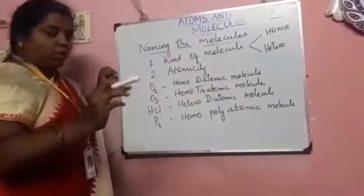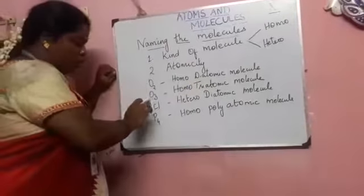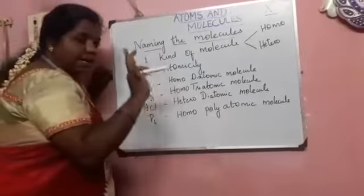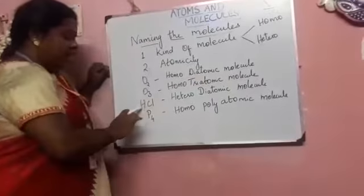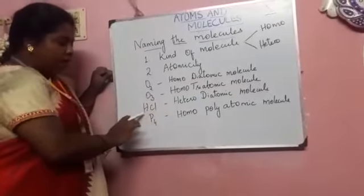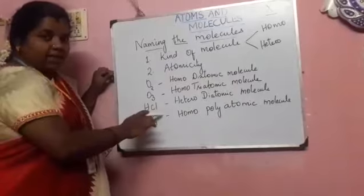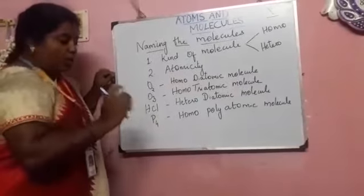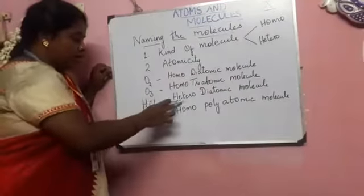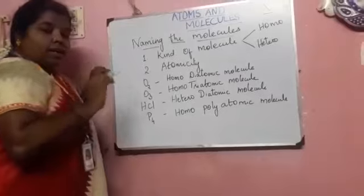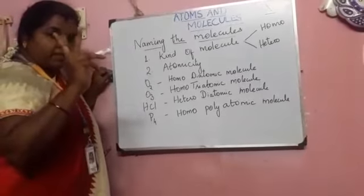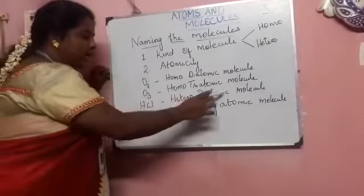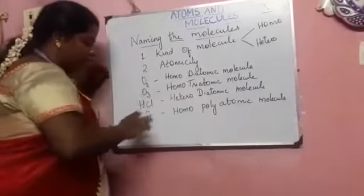O3 is ozone — only oxygen is present, so homo, and three atoms means triatomic. O3 is a homo triatomic molecule. HCl has two different elements, H and Cl, so it is hetero. Two atoms means diatomic — HCl is a hetero diatomic molecule.